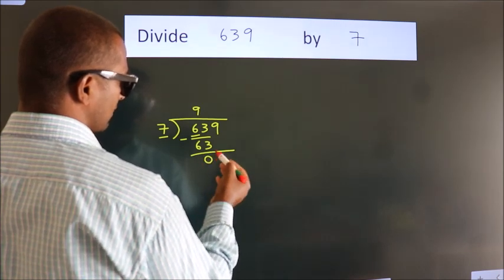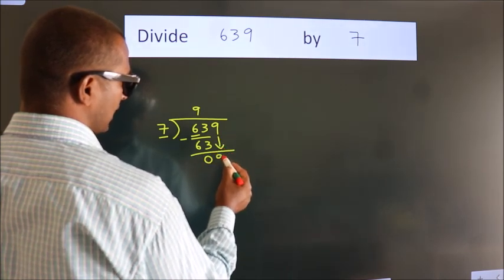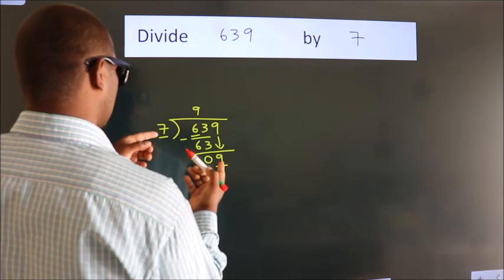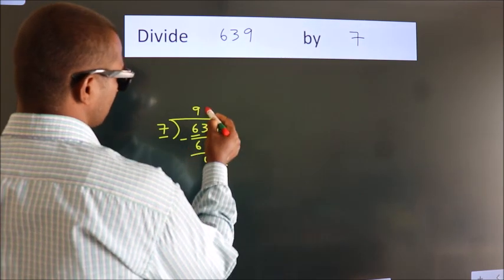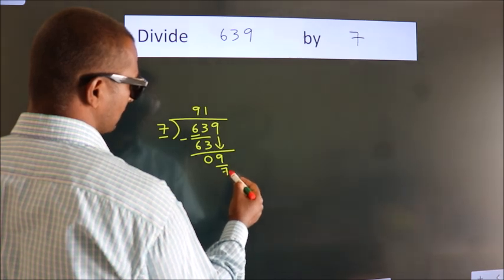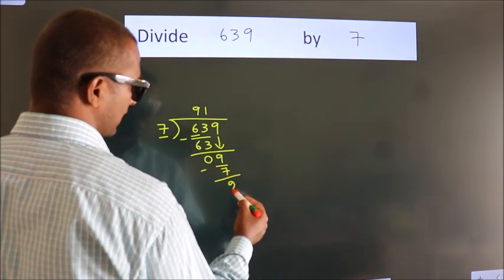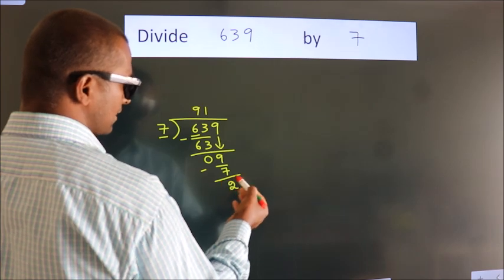After this, bring down the beside number. So, 9 down. 9. A number close to 9 in 7 table is 7 ones, 7. Now we subtract. We get 2.